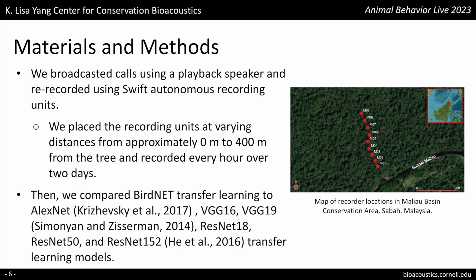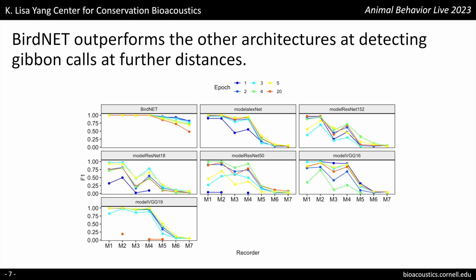Then we compared BirdNET transfer learning to other transfer learning models, such as AlexNet, VGG19, and ResNet152. These are commonly used transfer learning architectures that vary in depth and complexity. We compared their performance using a different number of epochs, which is one complete pass of the entire training dataset through the neural network during training. We can see that the maximum F1 scores for VGG16 and VGG19 are closer to 1 at close distances, but BirdNET surpasses their performance at further distances with a maximum F1 score of 0.75, while the other architectures average about an F1 score of 0 to 0.15 at further distances.